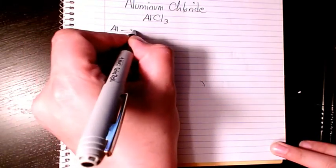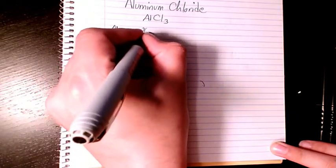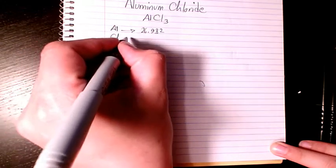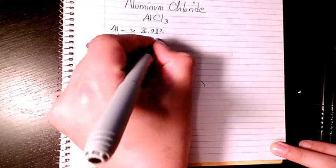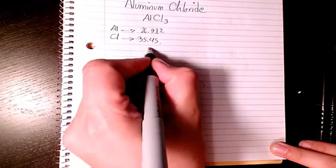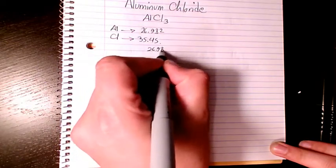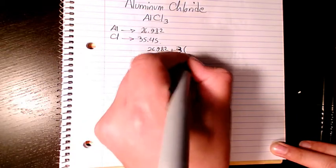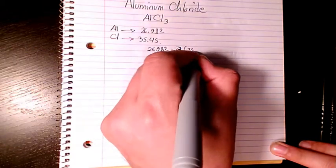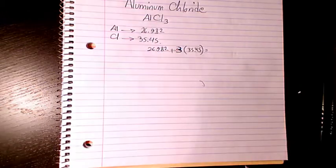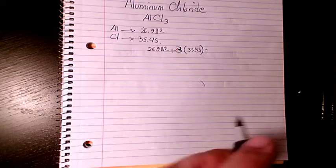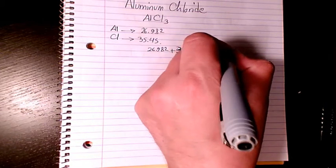So it's going to be 26.982 plus three times 35.45. That's 26.982 plus 106.35, which equals 133.33.